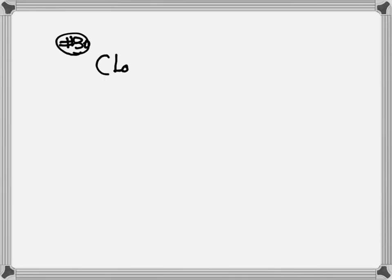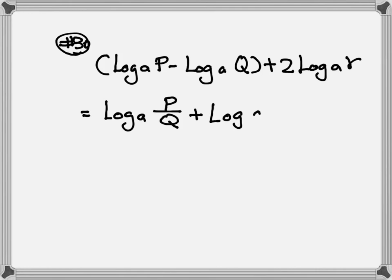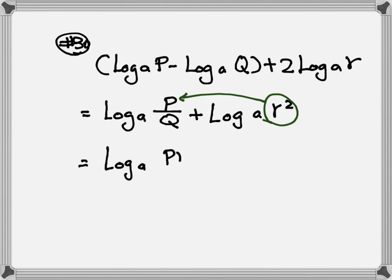Number 30: we have parentheses — log base a of p minus log base a of q, plus 2 log base a of r. We use order of operations, working inside the parentheses first. Inside, we have subtraction, so we change to division: log base a of p over q. For the 2, we change it to become the exponent: log base a of r squared. Now we have addition between them, so we multiply — and when multiplying a number to a fraction, multiply to the numerator. The answer is log base a of p times r squared over q.